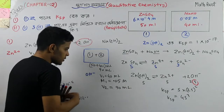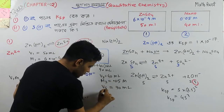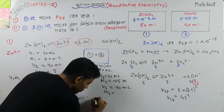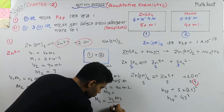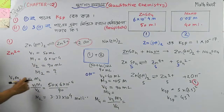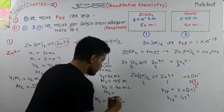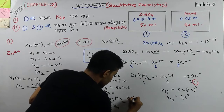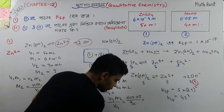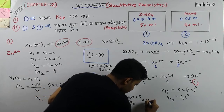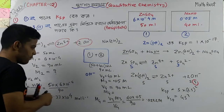So this is the second standard of V3 M3. For this in the second standard, V3 M3, in V4 and M4, on the left side. So let's take a look: V3 is 40, M3 is 0.05, and V4 is 90. So we calculate M4. M4 is 0.0222. So this is M4.